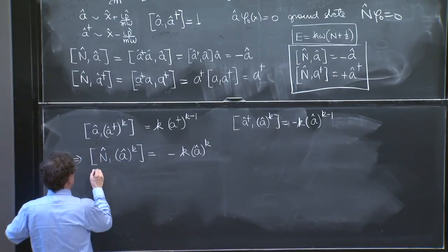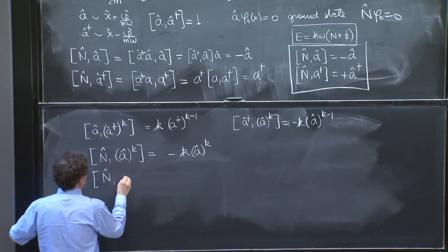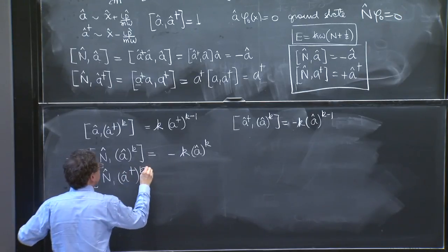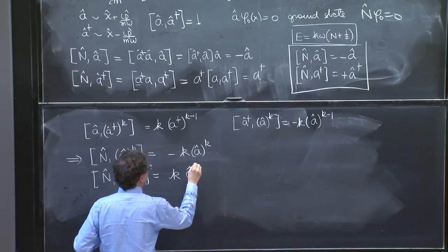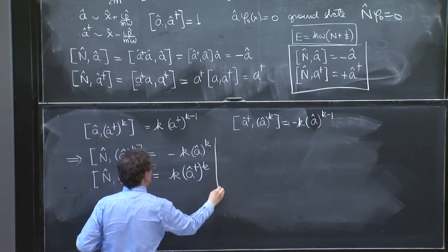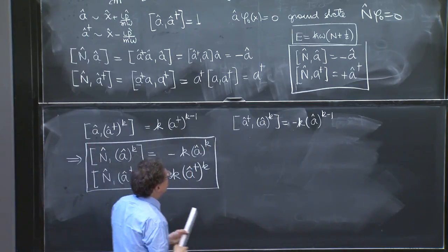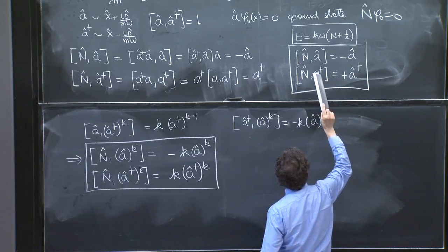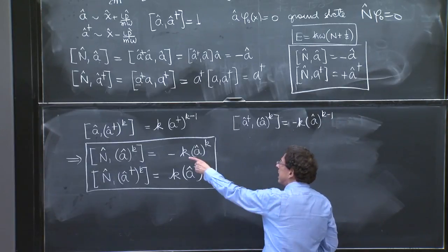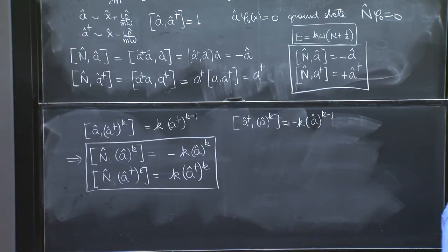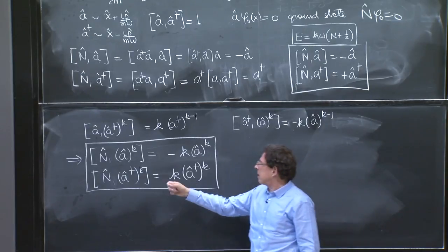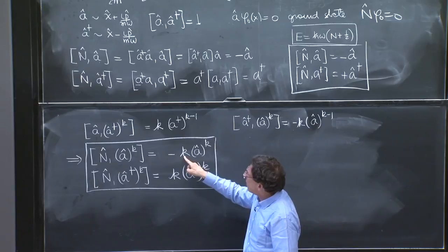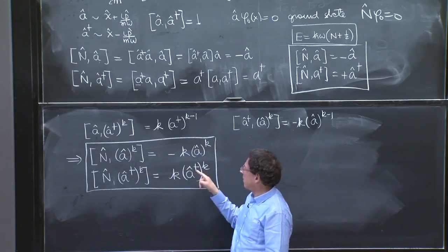And similarly, n a hat dagger to the k. So what happened before that the n operator, n hat operator, leaves the a the same but puts a number, leaves the a dagger the same and puts a number. Here, you see it happening again. n with a collection, with a string of a hat, gives you the same string but a number. And with a collection of a daggers, gives you the same collection of a daggers with a number.